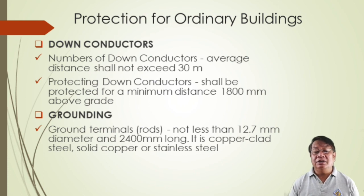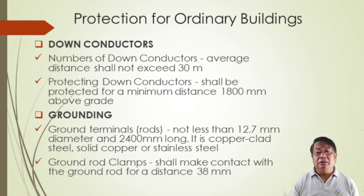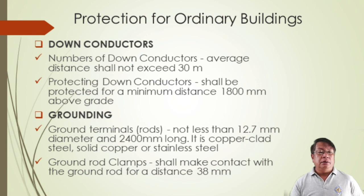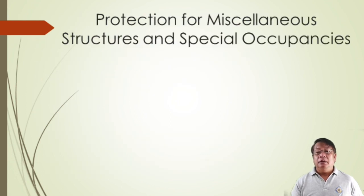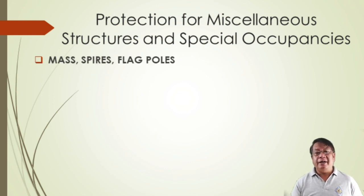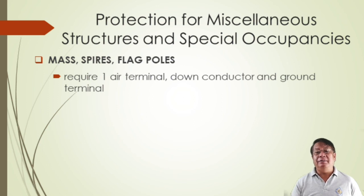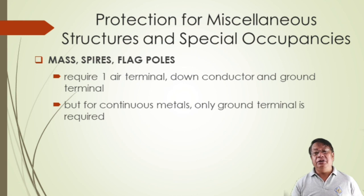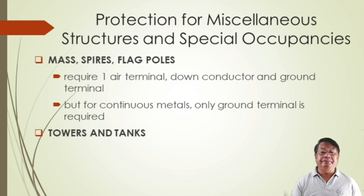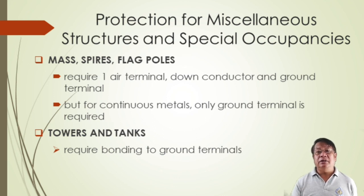For grounding terminals using rods: not less than 12.7 mm diameter and 2.4 meters long, of copper-clad steel, solid copper, or stainless steel. Ground rod clamps shall make contact with the ground rod for a distance of 38 mm. For protection for miscellaneous structures and special occupancies such as masts, spires, and flagpoles, one air terminal, down conductor, and ground terminal are required. For continuous metal structures, only the ground terminal is required. Towers and tanks require bonding to ground terminals.